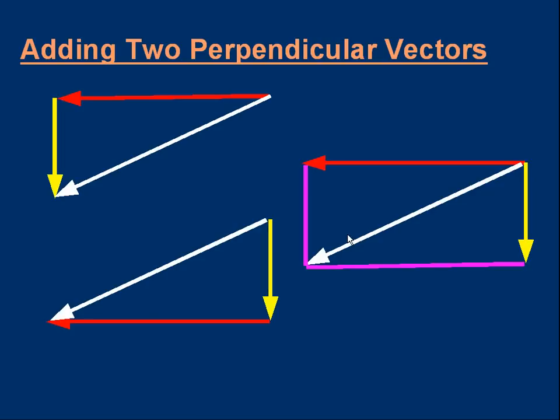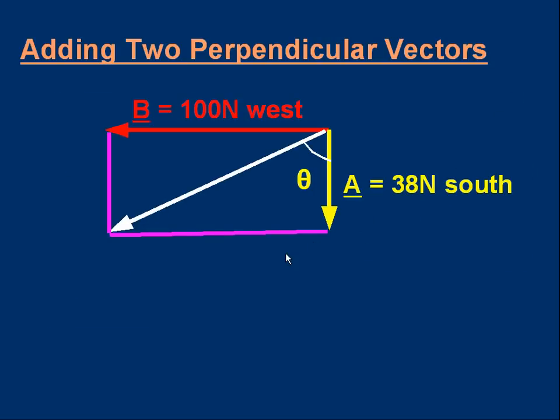And it doesn't matter which of these we choose. We need to find the length of the resultant, the length of the white line and the angle that it makes to north. Which is up there. I'm going to use the parallelogram, the rectangle.